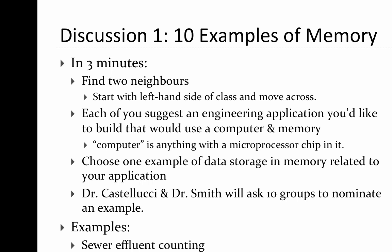Dr. Castellucci and I will ask up to 10 groups to share examples from their discussions. Possible examples include, from a civil engineering perspective, sewer effluent counting, or from an aerospace perspective, an airplane black box. In both cases, the computer is being used to sense things happening in the system, store or manipulate data, and possibly transmit it to a central station, an engineer, the pilot, or someone else to provide information.